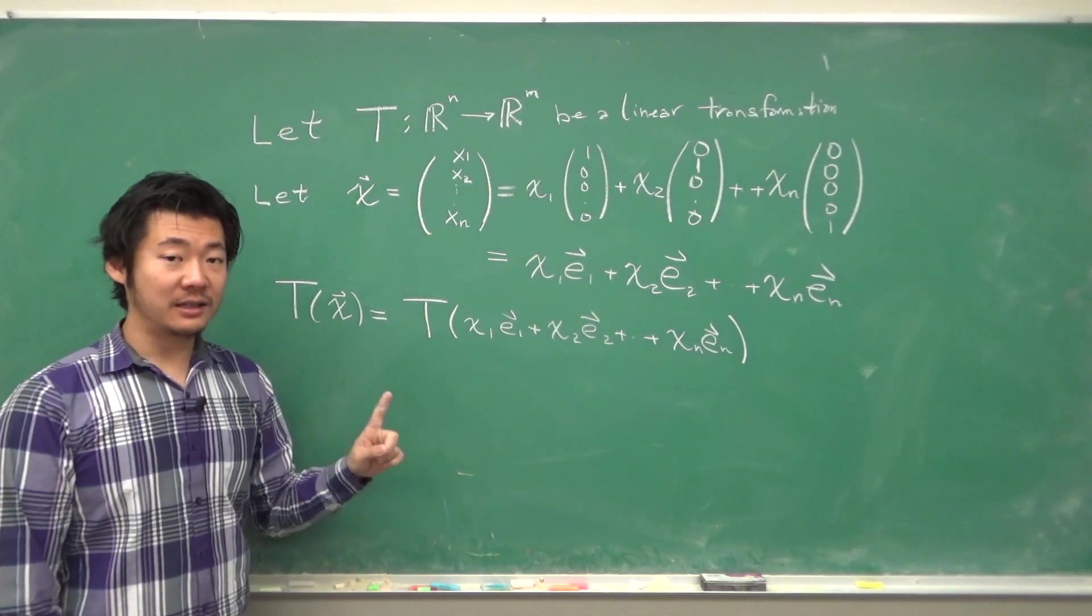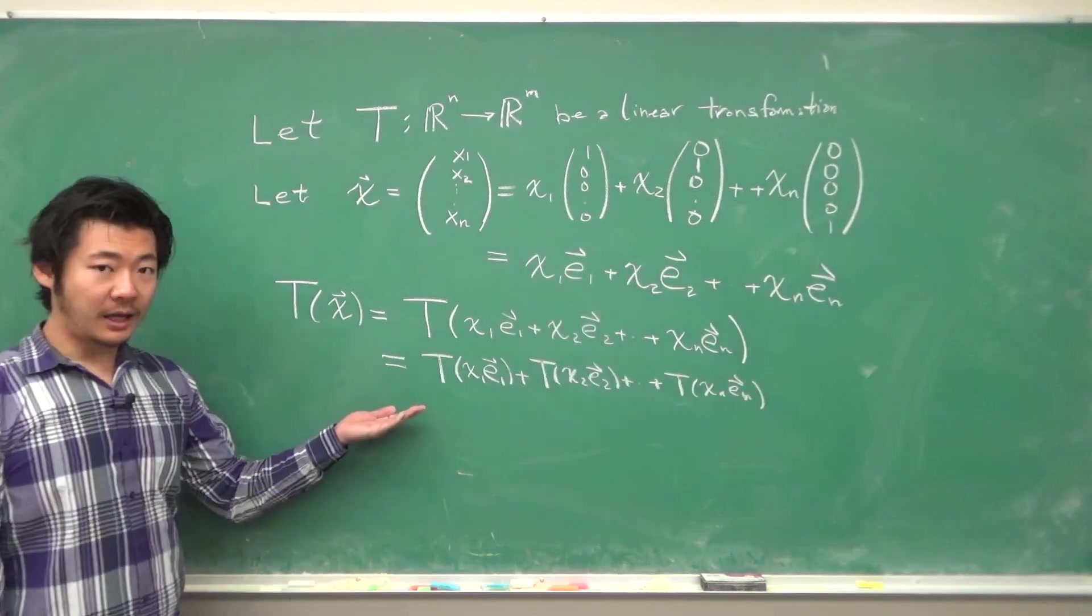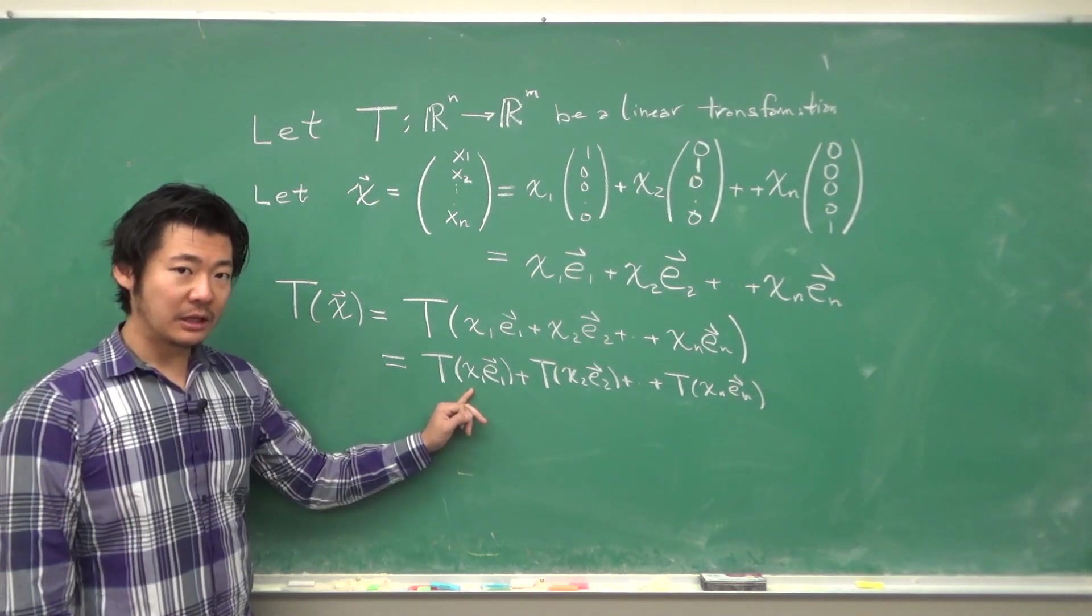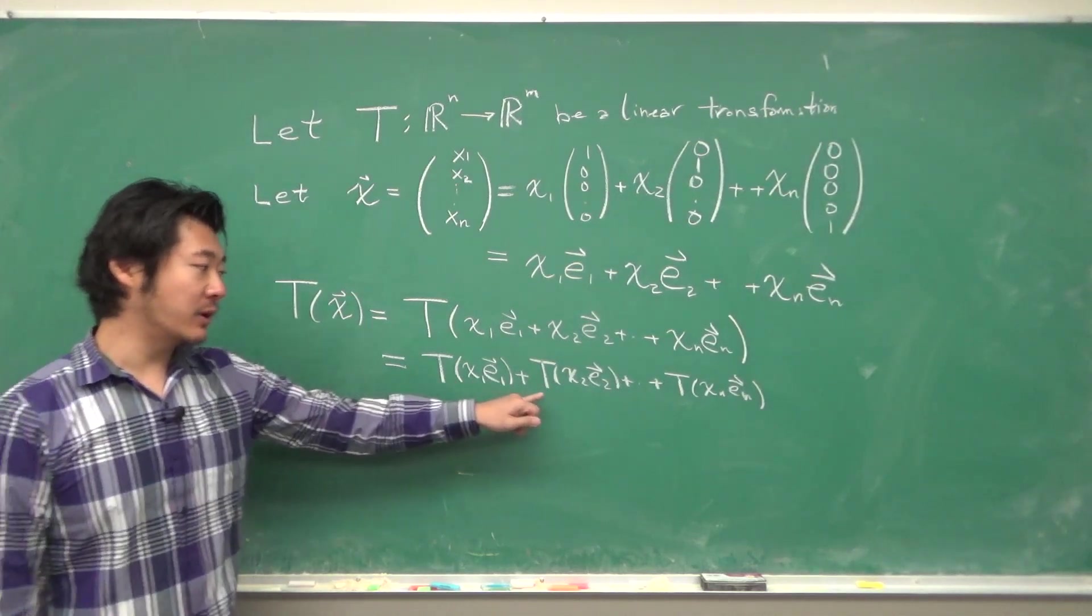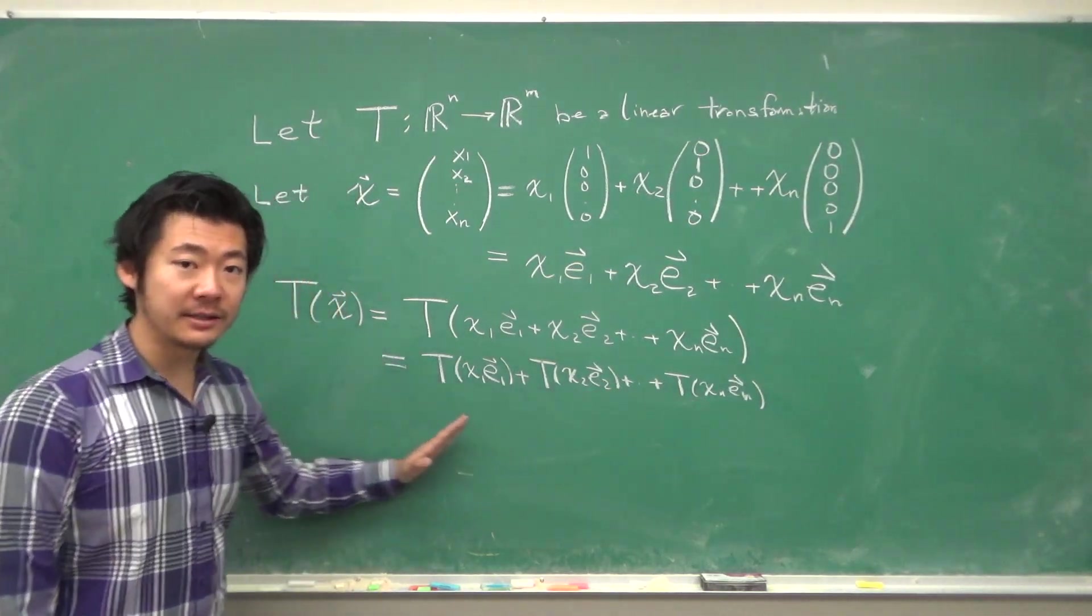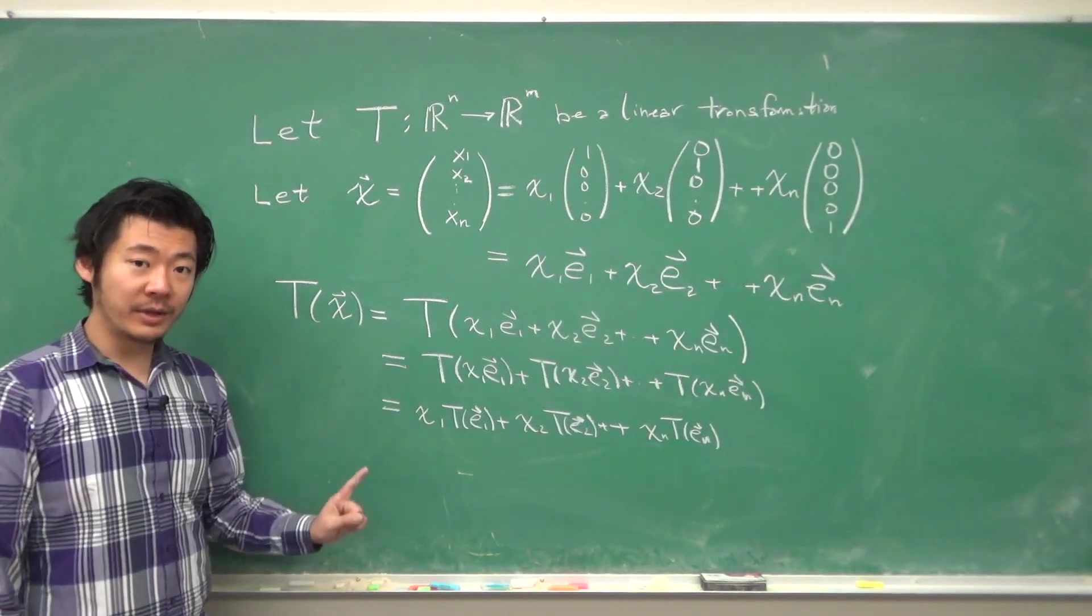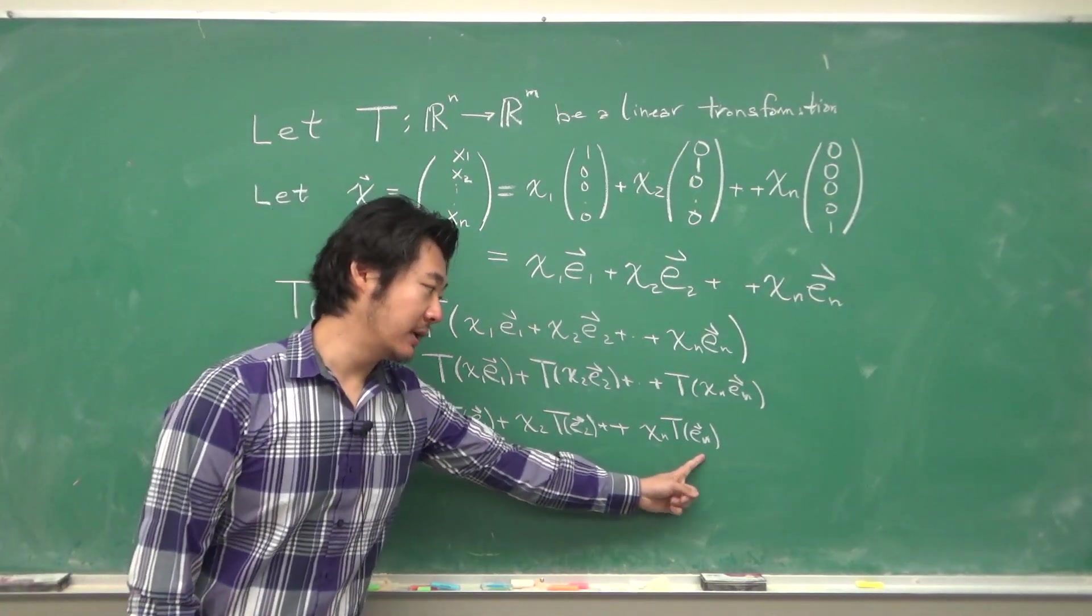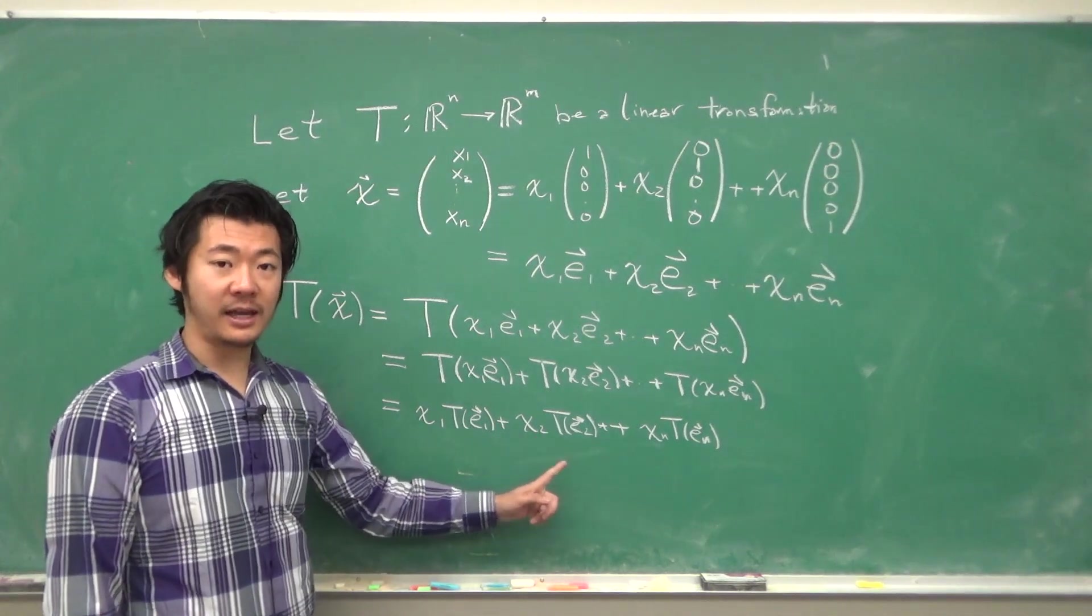Now, we use the fact that T is a linear transformation to first split the sum up as something like this. The second property of a linear transformation is that scalars can move outside. So we can move each of the x₁, x₂ up to xₙ outside the transformation so that we get a linear combination of the vectors T(e₁), T(e₂), all the way to T(eₙ) with weights x₁, x₂, to xₙ.